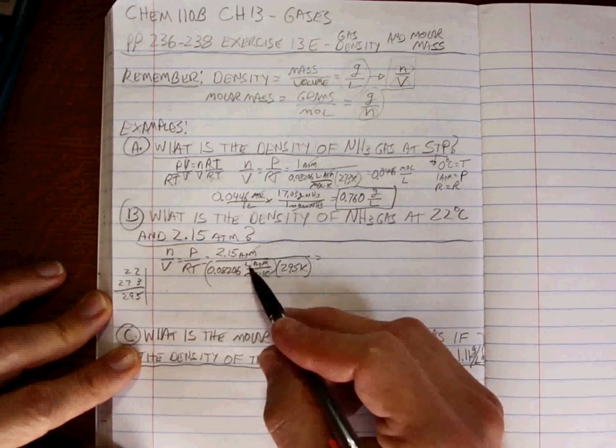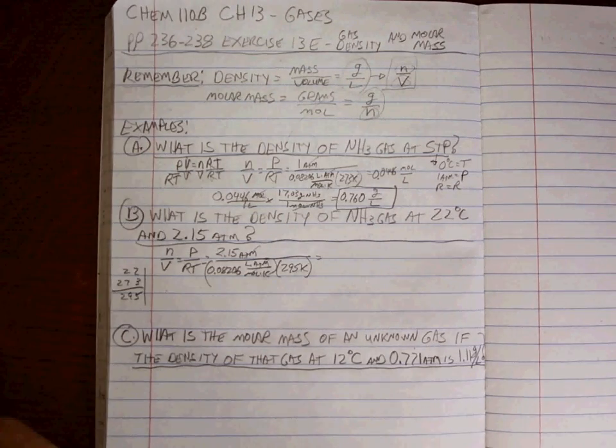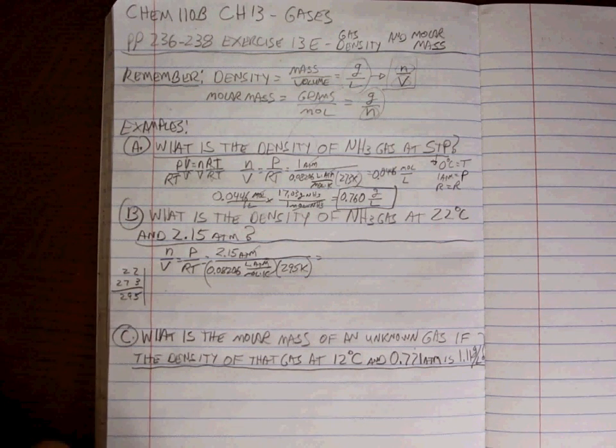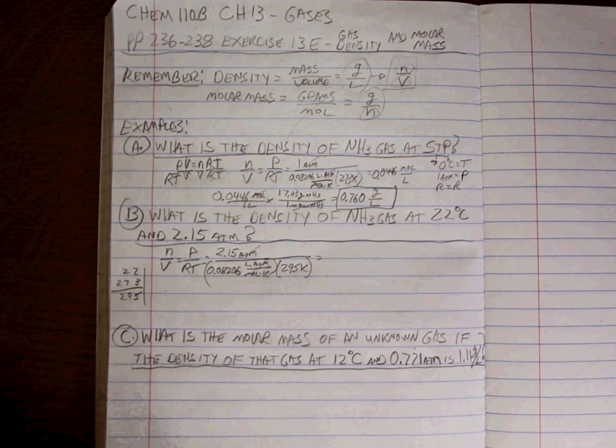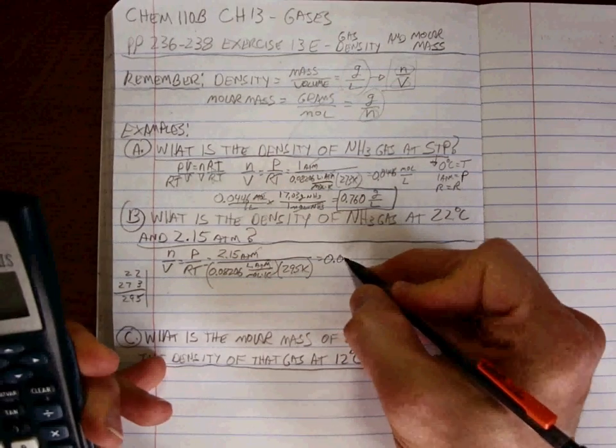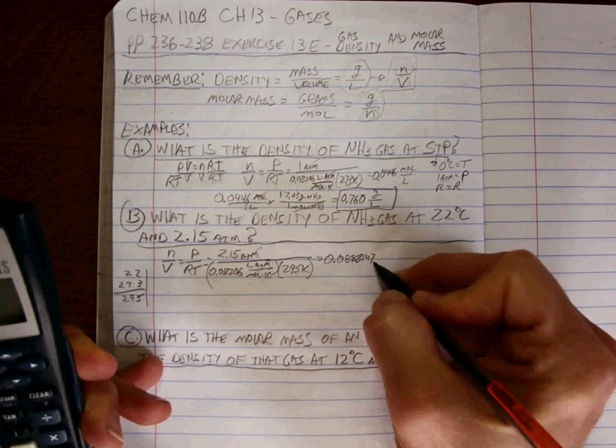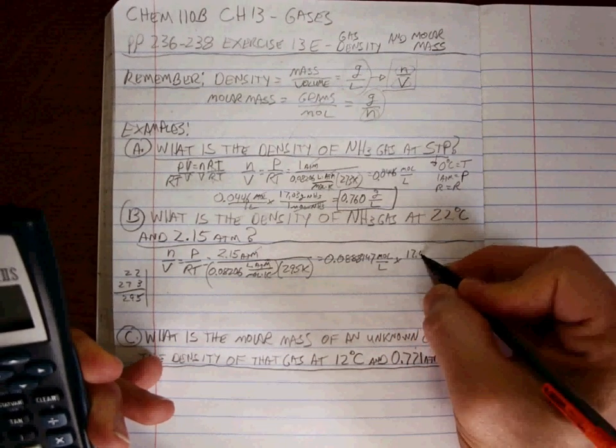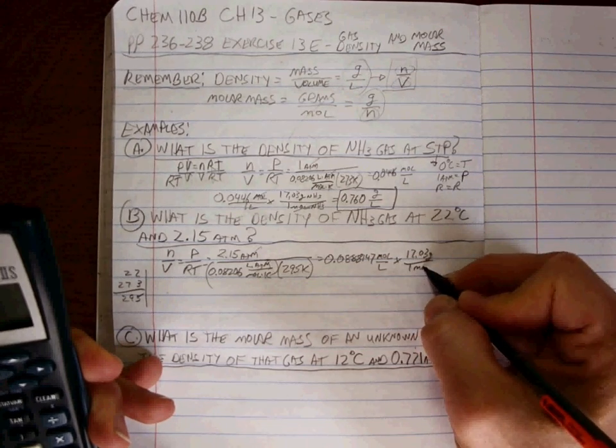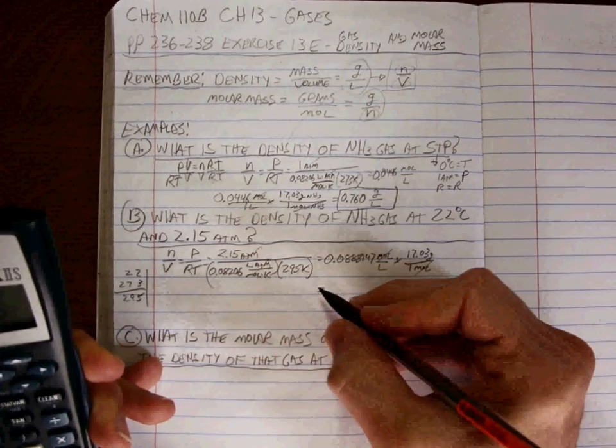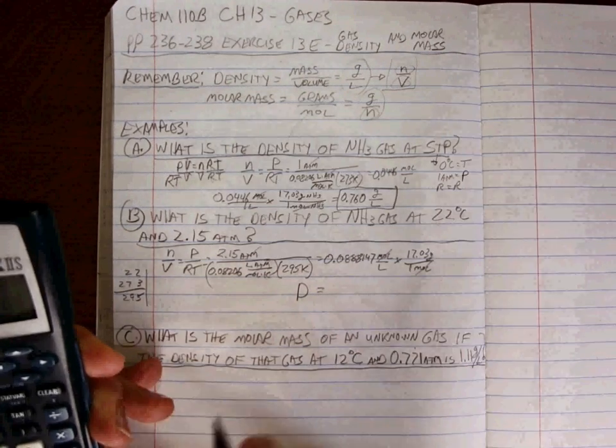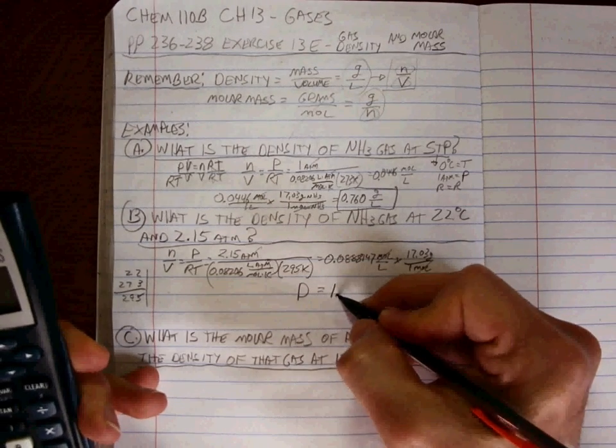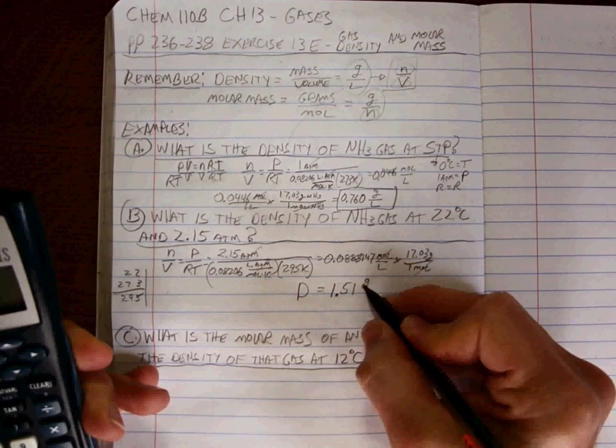Again, 1 divided by liters divided by moles is moles per liter. 2.15 divided by 0.08206 divided by 295, 0.088147 moles per liter. When we multiply it by 17.13 grams per one mole, we get a density of 1.51 grams per liter.